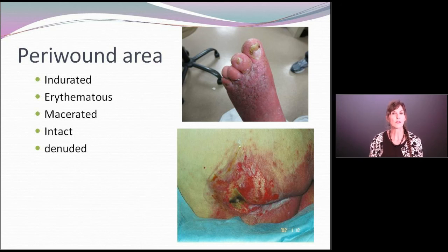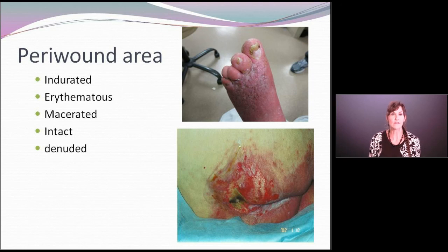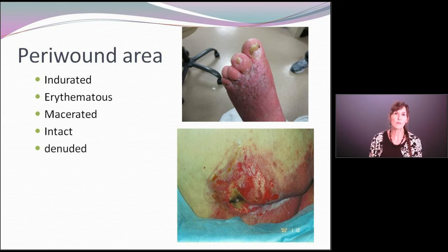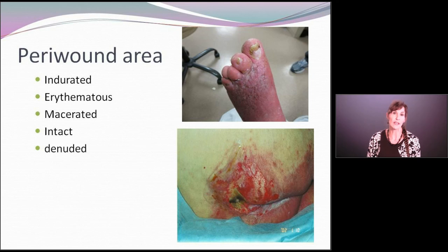Is there redness around the wound — erythema? Erythema may be a result of a chronic inflammatory process, some early cellulitis that's developing, or some irritation from dressing or perhaps some friction going on in the wound. So you want to document that. Do you have maceration? Maceration is very important because if a wound becomes macerated, it really can lead to further damage to the peri-wound area and actually in some cases make the wound worse or make the wound larger.